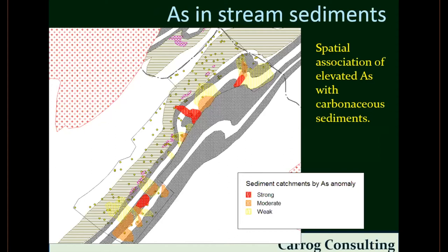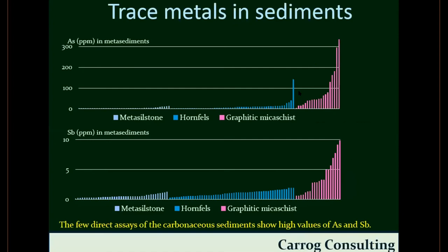Where is this arsenic coming from? My contention is the arsenic is coming from the graphitic or carbonaceous metasediments in the footwall. Stream sediment data show that arsenic-enriched samples all derive from carbonaceous sediment bedrock. The sulfide-rich siltstones into which the intrusions are intruded have relatively low arsenic values. This is confirmed by the next slide, where carbonaceous sediments have arsenic values over 100 ppm and antimony over 5 ppm, whereas the other host sediments have low values of both.